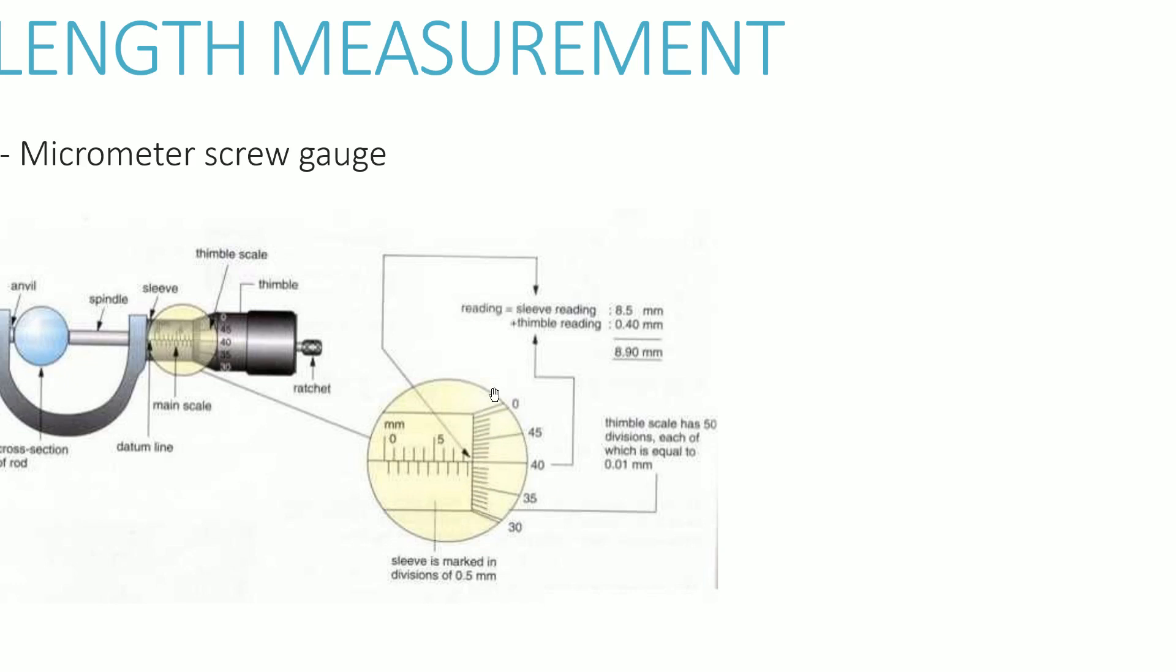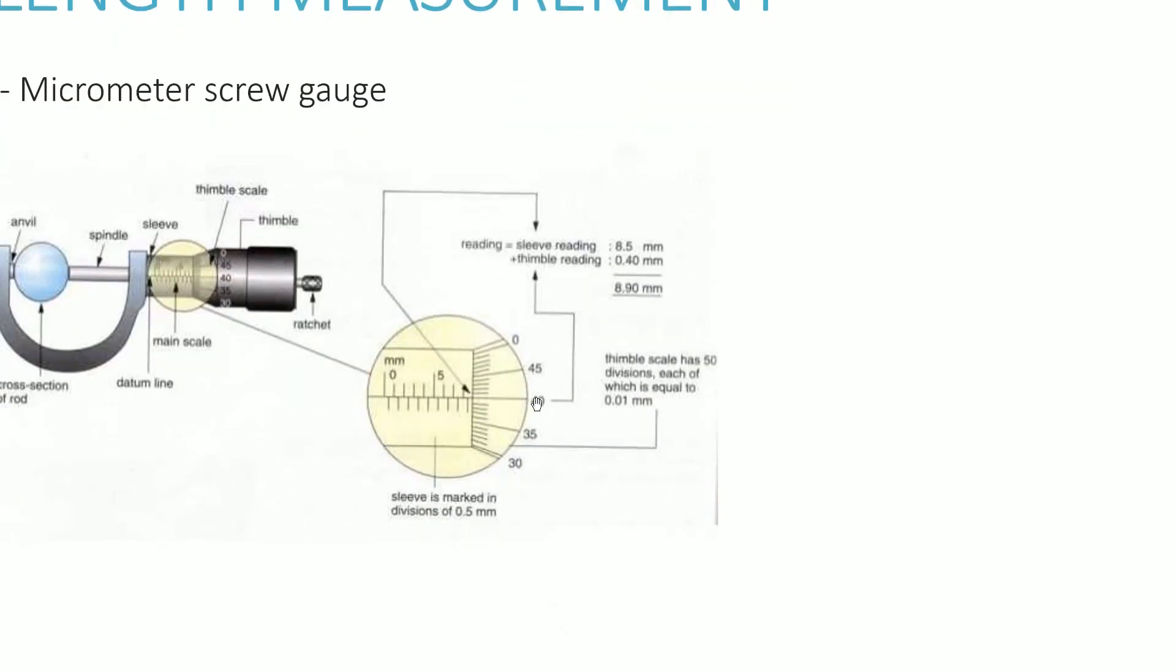Well, then you use the second scale. They call it the thimble scale, which is the scale that you see on the right here. And it has a total of 50 divisions, which each equal to 0.01 millimeters. So similar to the vernier caliper, this time it's 0.01 millimeter per division, not 0.02. So if you take a look, this is a lot more simpler, you just take a look at where exactly the main scale aligns with on the second scale, and you can see that it's 40. So 40 divisions, and each is equated to 0.01 millimeters. So 40 times 0.01 is 0.4 millimeters. So then we originally have 8.5, and then you add it to 0.4 millimeters. So the overall length of this object is 8.9 millimeters.